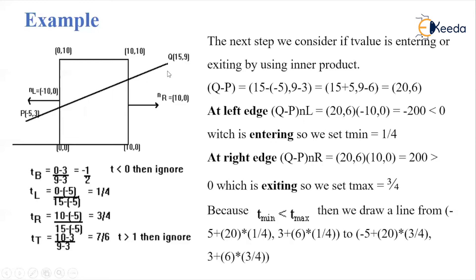For t_bottom: (0 - 3) / (9 - 3) = -1/2. For t_left: (0 - (-5)) / (15 - (-5)) = 1/4. For t_right: (10 - (-5)) / (15 - (-5)) = 3/4. For t_top: (10 - 3) / (9 - 3). For top we use this value, for right we use this value, for left this value, and for bottom this value. In this way we calculate t_b, t_l, t_r, and t_t.